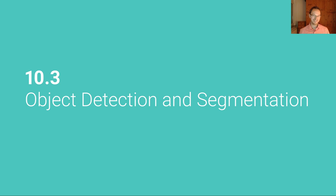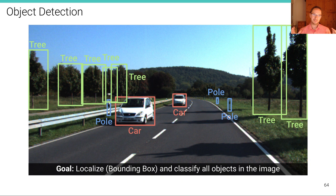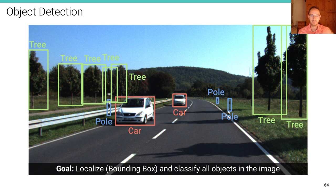Let's now move to object detection and some other related tasks that can be solved with similar algorithms, such as object instance segmentation or object mesh prediction. Let's remind ourselves what object detection is about. The goal is to localize and classify all objects in the image. We're not interested in stuff categories here; we want to localize objects in terms of a tightly fitting 2D bounding box as well as a class label — for example, car (label 5) or pole (label 7). That's the high-level idea.